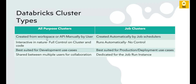With an All-Purpose Cluster, the cluster stays alive unless it times out or someone manually terminates it. Multiple users can interactively run their notebooks on it. Users have full control — they can manually terminate the cluster, upscale it, restart it, and run individual parts of the code. With a Job Cluster, you have no such control: you cannot restart it or perform any such activities. It simply runs the entire notebook code as a batch and terminates automatically.